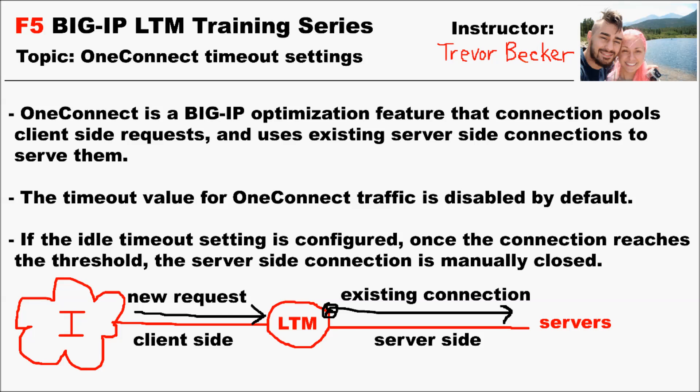As I described in my last video, OneConnect is a BigIP system optimization feature that performs connection pooling for server-side connections on one or more virtual servers. It increases the efficiency of a connection because new client requests can utilize server-side connections that are already formed.